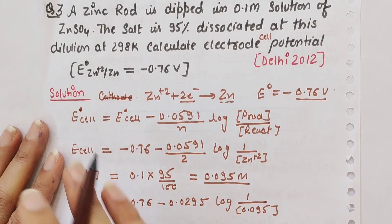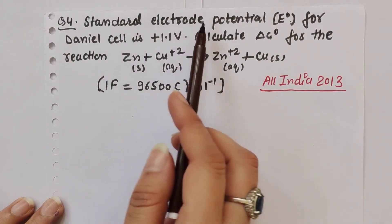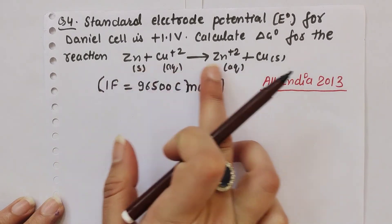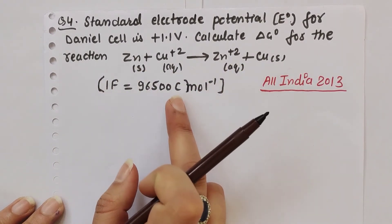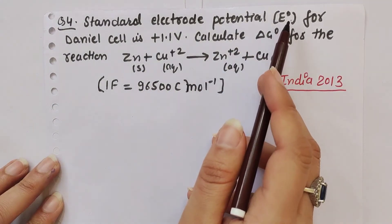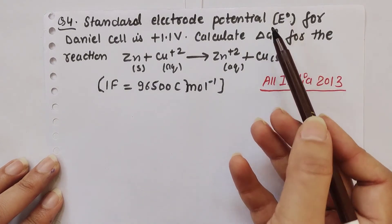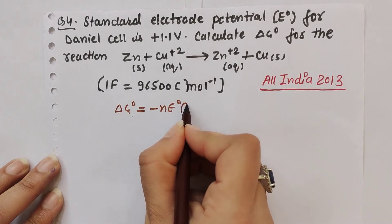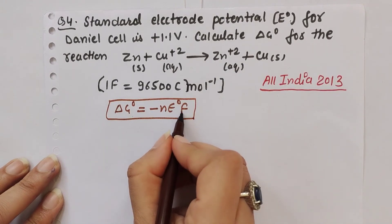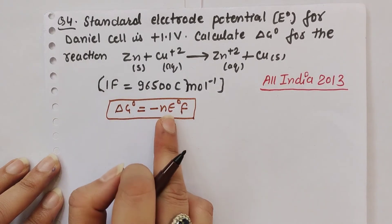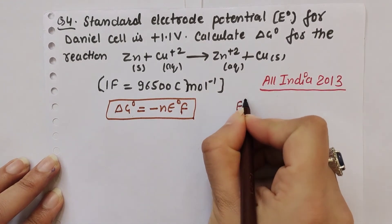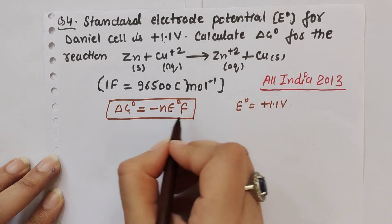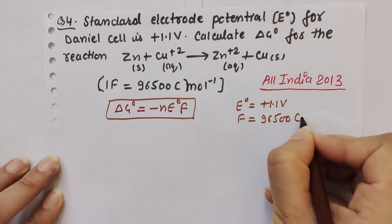Next question is about the Daniel cell. Standard electrode potential E° for Daniel cell is +1.1 volts. Calculate ΔG° for this redox reaction. We know that 1 faraday equals 96,500 coulombs per mole. The relation is: ΔG° = -nE°F, where F is the Faraday constant.